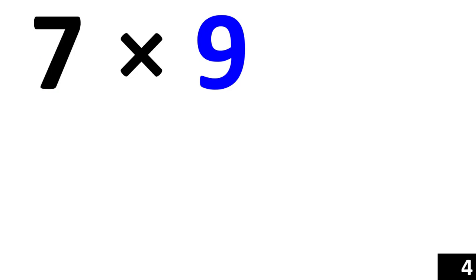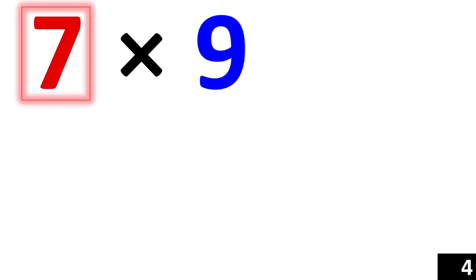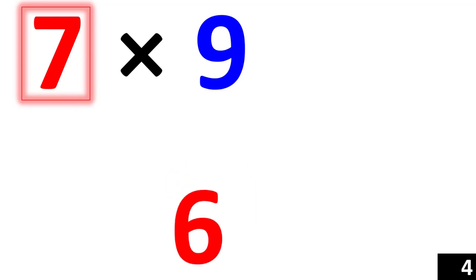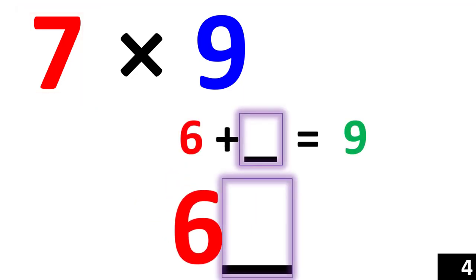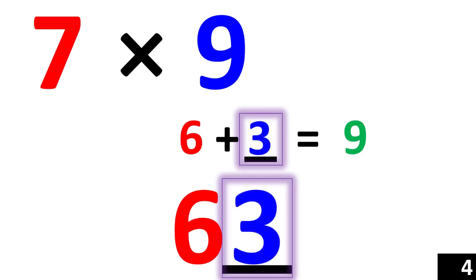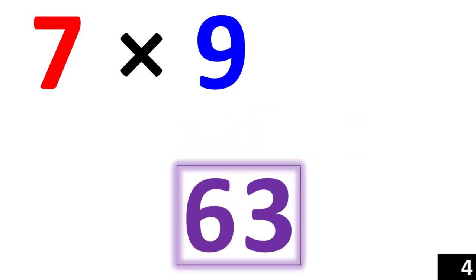7 times 9. First, we look at the number 7 and we say, what's 1 less than the number 7? That's 6. So, 6 is your first number. Then we say, 6 plus what number gives us 9? 3. So, 3 is your second number and 63 is your answer.